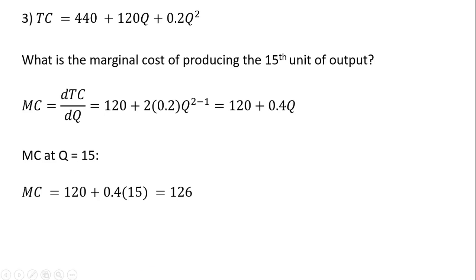A slightly more complicated total cost equation. What is the marginal cost of producing the fifteenth unit of output? The marginal cost is the derivative of total cost with respect to output. The derivative of 440 is 0, the derivative of 120q is 120, and you can see how I took the derivative of the last term — bringing the two down in front, multiplying through, and subtracting one from the exponent — so marginal cost is 120 plus 0.4q. At 15 units of output, plug 15 in for q, and the marginal cost for the fifteenth unit is $126.